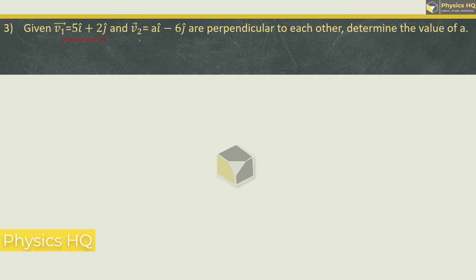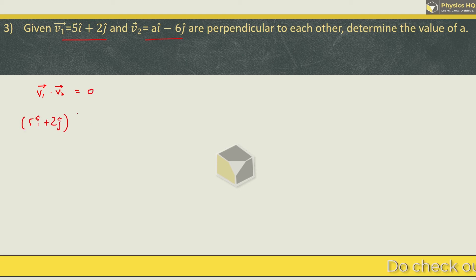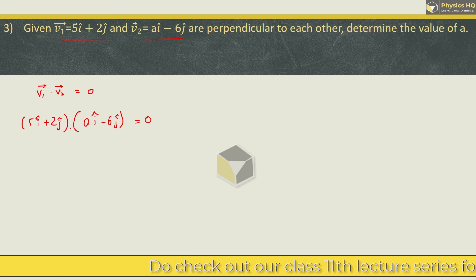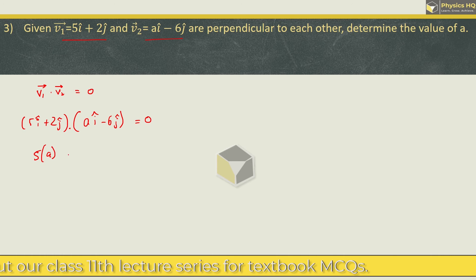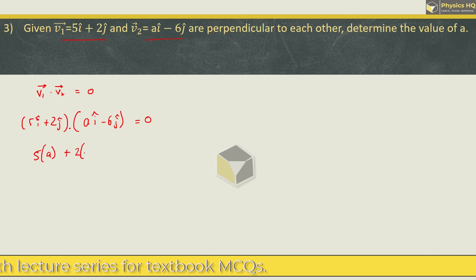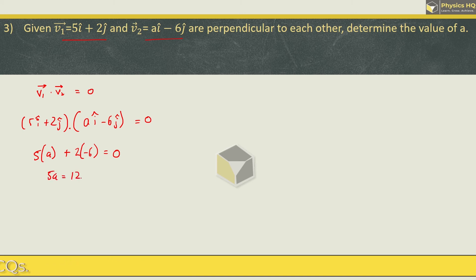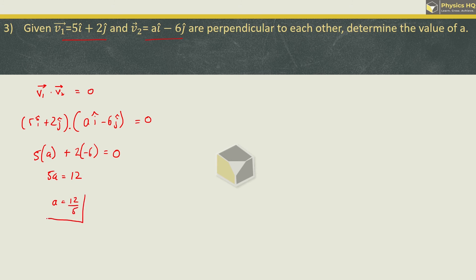Next sum: Given v1 equal to 5i plus 2j and v2 equal to ai minus 6j, which are perpendicular to each other, determine the value of a. We have seen before that if two vectors are perpendicular, their dot product is 0. So: 5i plus 2j dot product with ai minus 6j equals 0. In the dot product we multiply the x-axis components, so 5 times a, then the j-components give 2 times minus 6. This equals 0, giving 5a minus 12 equals 0, so finally a equals 12 upon 5.